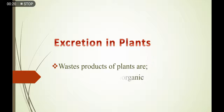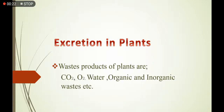Number one: carbon dioxide — when the rate of respiration is greater than the rate of photosynthesis, it is considered an excretory product. Similarly, oxygen — when the rate of photosynthesis is greater than the rate of respiration — is also surplus, so it is excreted out of the plant body. Water is an excretory product in both of these two reactions.